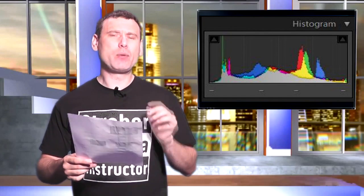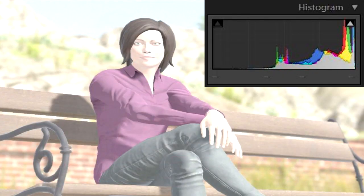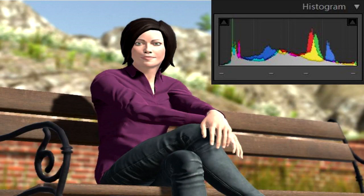However, if we took a photograph and the model was well overexposed, we could look at our histogram and notice a shift to the right-hand side. This would indicate that the photo's exposure is overexposed. Using that information, we could readjust our shutter speed, aperture, or ISO in order to bring the histogram's graph back into the centre.